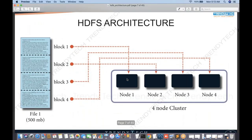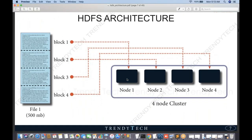The correct approach is: if you have four machines, is there a way to divide the file into four parts and give each part to a separate node? The technical term for these parts is called a block.